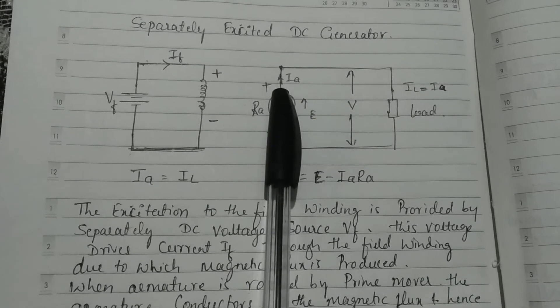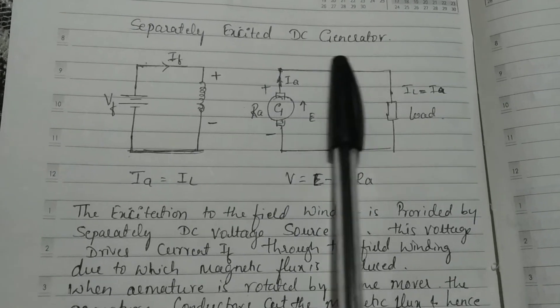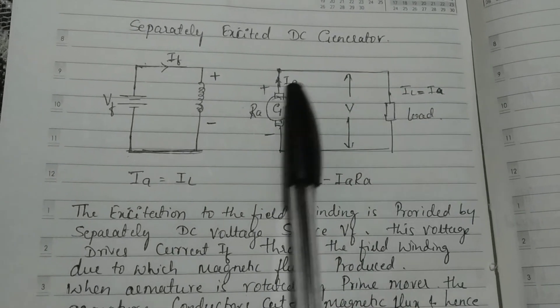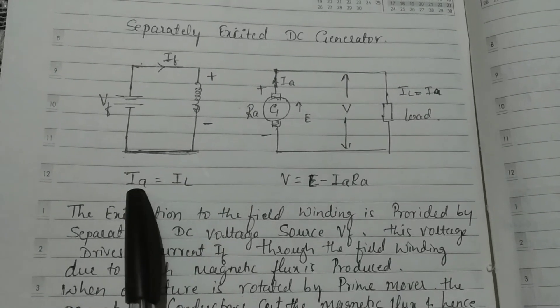When EMF is induced, the armature current is always equal to the load current IL, because the same current flows through the load. That's why Ia equals IL.